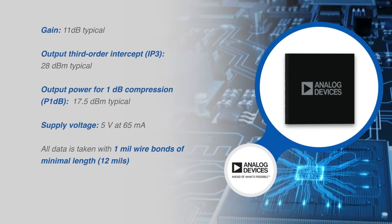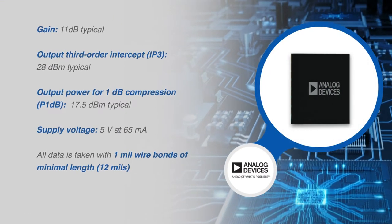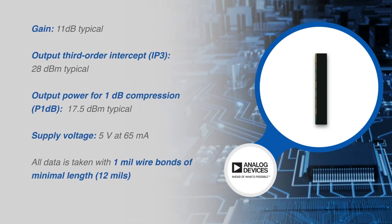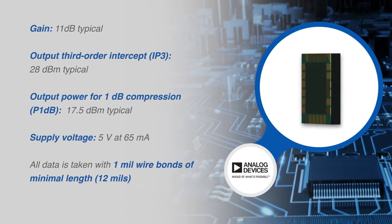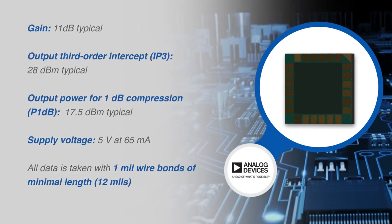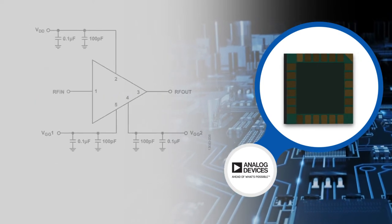The HMC1126 provides 11 dB of gain, 28 dBm output IP3, and 17.5 dBm of output power at 1 dB gain compression while requiring 65 mA from a 5V supply.